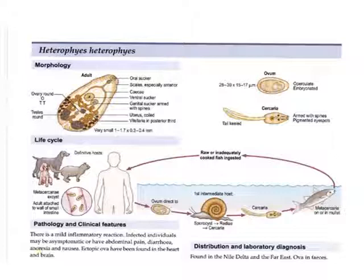It is found in the Nile Delta and Far East with cosmopolitan distribution globally. The ova can be detected by examination of fecal specimens to be diagnosed in the laboratory.